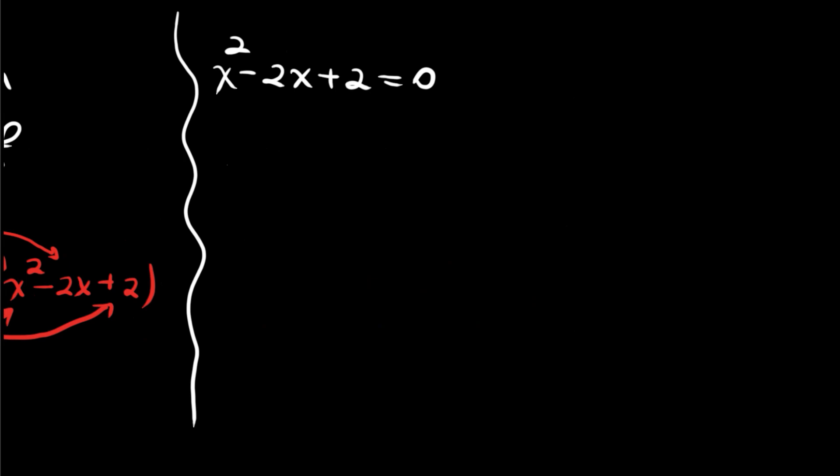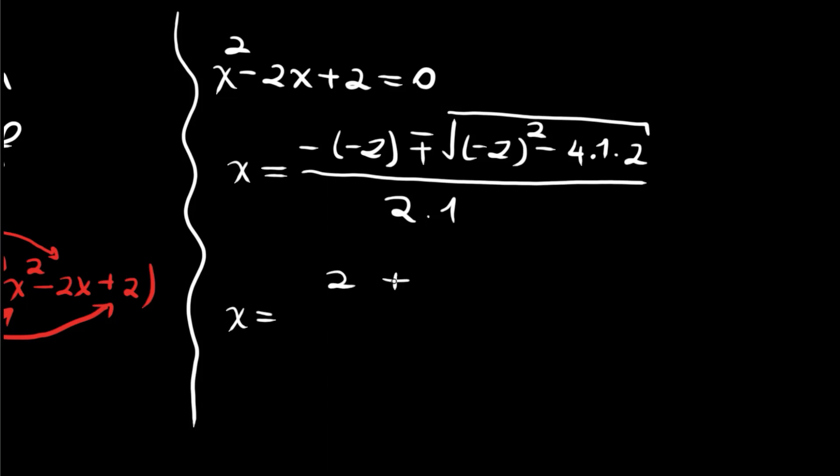We will find from the quadratic formula that x = [-(-2) ± √((-2)² - 4·1·2)] / (2·1). Now we have 2 ± √(4 - 8).